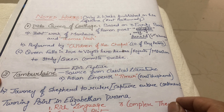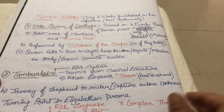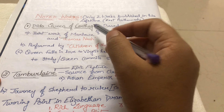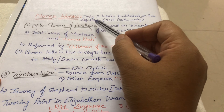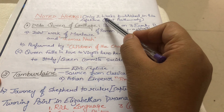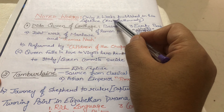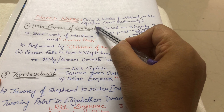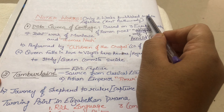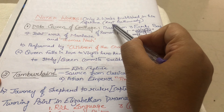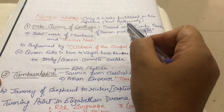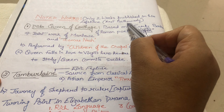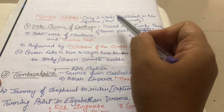Now we move to his noted works. Christopher Marlowe's important works — we have to remember that only two works were published in his lifetime, since his lifetime was very short, only 29 years. Only two works were published in his lifetime; the rest were published posthumously.